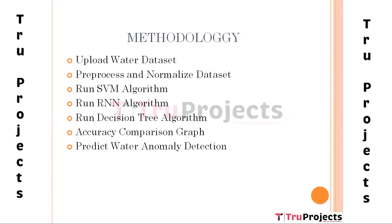The fourth module is Run RNN Algorithm. Using this module we train the Recurrent Neural Network algorithm with the dataset and build the RNN model. This model is applied on the test dataset to calculate RNN accuracy, precision, and recall. The fifth module is Run Decision Tree Algorithm, where we train the dataset with the Decision Tree algorithm and build the Decision Tree model.